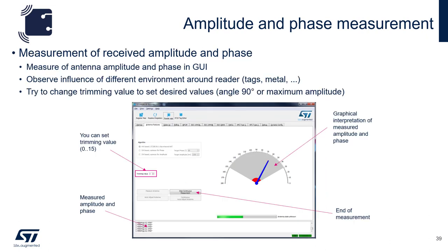Once continuous measurement is selected, you'll see the measurement of the amplitude and phase in the bottom portion of the GUI screen, as well as a graphical interpretation of both those measurements. In order to see the effect that devices in the field have, simply place a device in the field. I suggest some metal, because this has the greatest influence on the antenna. You'll see both the measurements change as well as the graphical interpretation of that data.